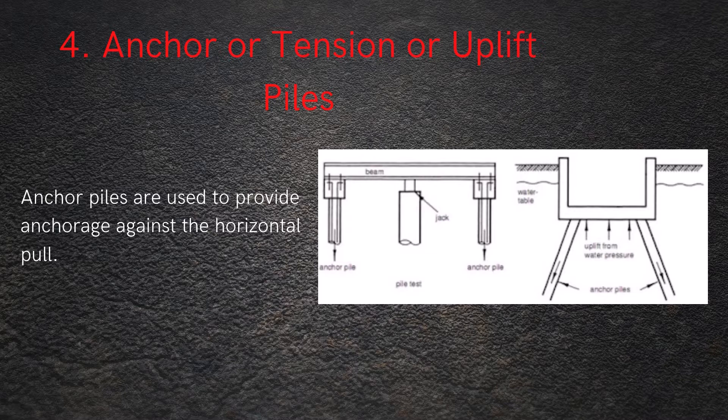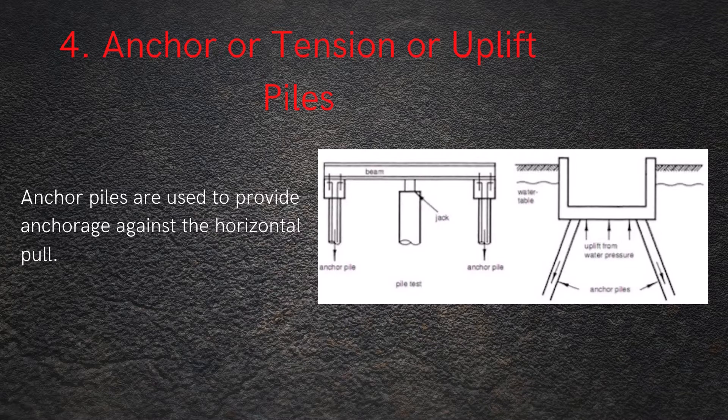Anchor piles are used to provide anchorage against the horizontal pull. Tension or uplift piles are piles used to anchor the structures that are subjected to uplift due to issues like overturning pressure, overturning moment that are derived due to horizontal forces.